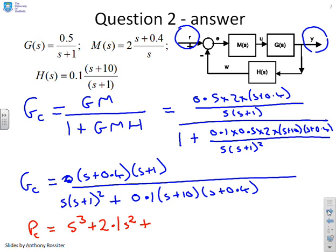Now I need to do the S terms. From S times S plus 1 squared I get a single S. From 0.1 times S plus 10 times S plus 0.4, I get 1.04S, giving me plus 2.04S. Then finally the constant is 0.4.